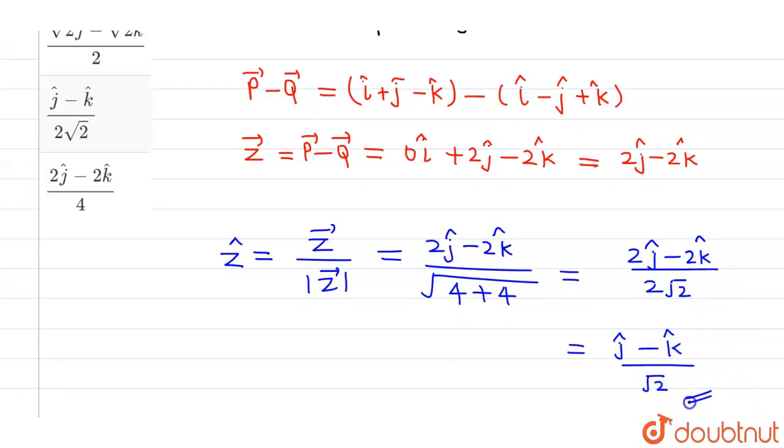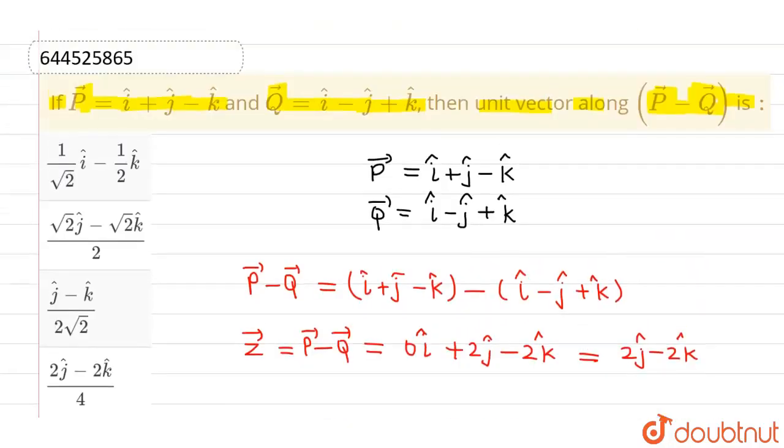So this is our final answer. Now I have to correct the options because none of the options is matching. The third option should be j cap minus k cap divided by root 2—this is not 2 here. So this is the corrected option, and this is right. Rest all options are incorrect. I hope you understood, thank you.